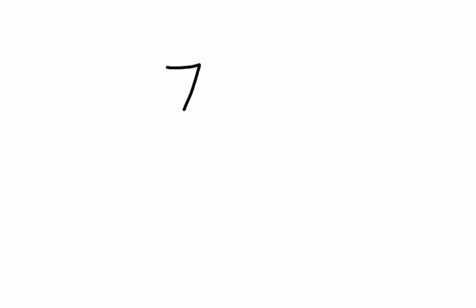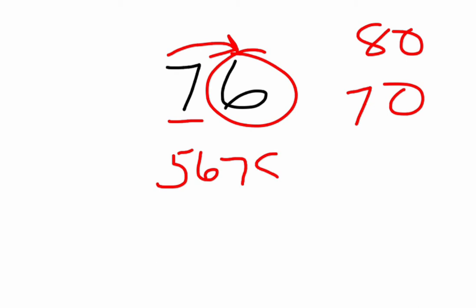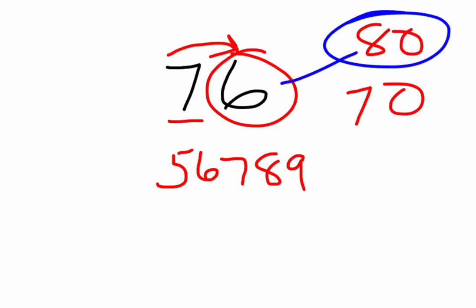One more example — if we had the number 76. If I round it up, I would change the seven to an eight, and I would have 80. If I rounded down, the seven would stay seven, and I would have 70. It depends on the digit in the ones place, which I circle. I'd ask myself, is it a five, six, seven, eight, or nine? And of course, you can see it's a six. So I'm going to round up — so 76 would round up to 80.